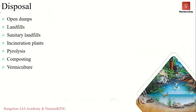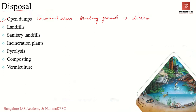When it comes to disposal of solid waste, the first and most common method is open dumps. Open dumps refer to uncovered areas where all waste is dumped together — untreated, uncovered, and unsegregated. This results in open dumps becoming a breeding ground for rats and flies and the spread of diseases, especially when rainwater carries chemicals from the site into other water bodies or seeps into the soil.